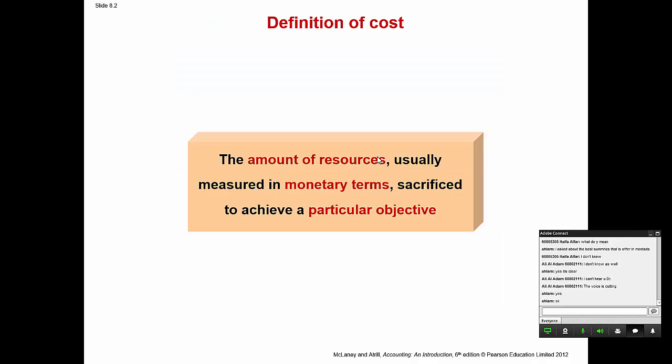What is cost? The cost is the amount of resources, usually financial resources, measured in monetary terms. This amount of resources will be sacrificed to achieve particular objectives. For example, if the company wants to buy a new asset, they will reserve some money to buy this asset. This amount of money we will call the cost of the asset.